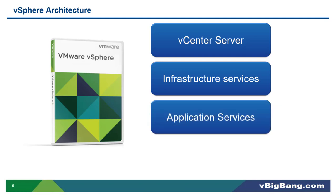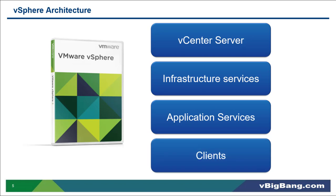The third component is application services. Application services ensures availability, security and scalability of your applications. For example, high availability and vMotion are two main application services. The last component is clients, which allows users to communicate with the vSphere data center.